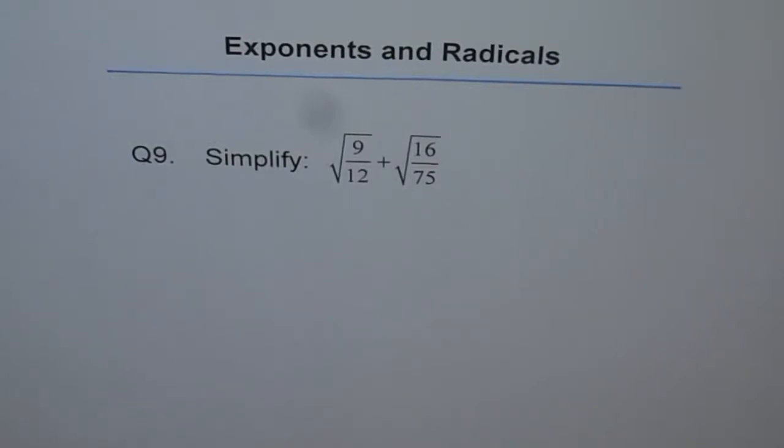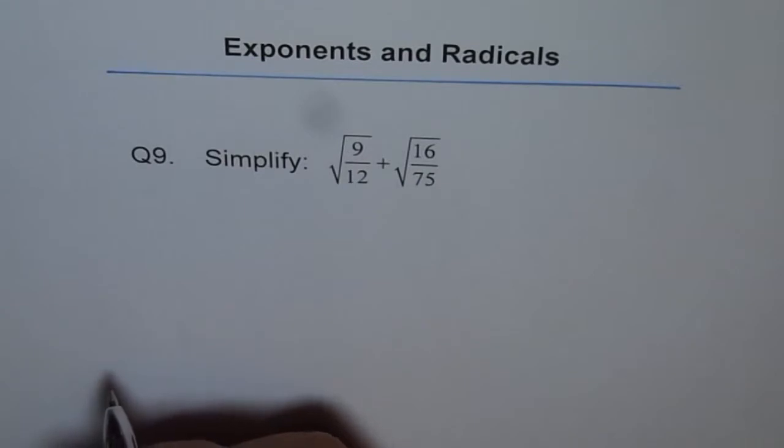Exponents and Radicals, question 9. Simplify square root of 9 over 12 plus square root of 16 over 75. Okay, so we are involving some fractions now.